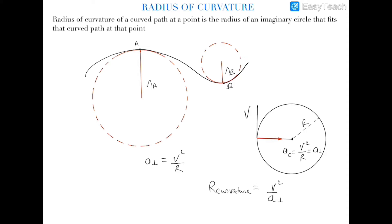Similarly, at point B, if we draw an imaginary circle which just fits into this curved path at point B, then the radius of this imaginary circle will be the radius of curvature of this curved path at point B. So the radius of curvature is the instantaneous radius of any curved path.